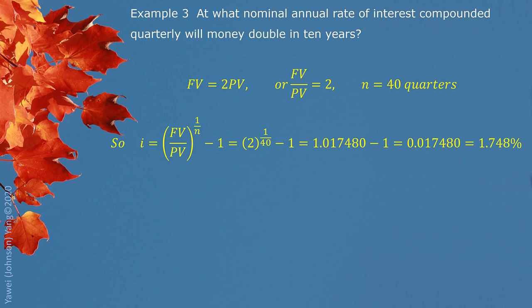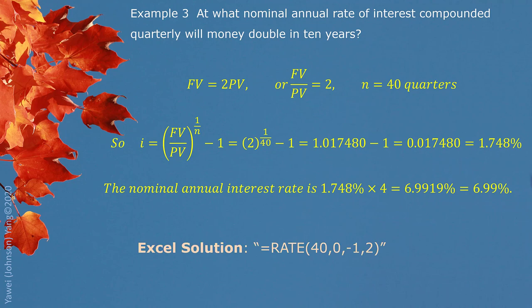Again, this number is periodic interest rate quarterly. So we need to multiply 4 to get annual interest rate, which is 6.99%. Again, show you Excel function here. You can try it out in Excel.